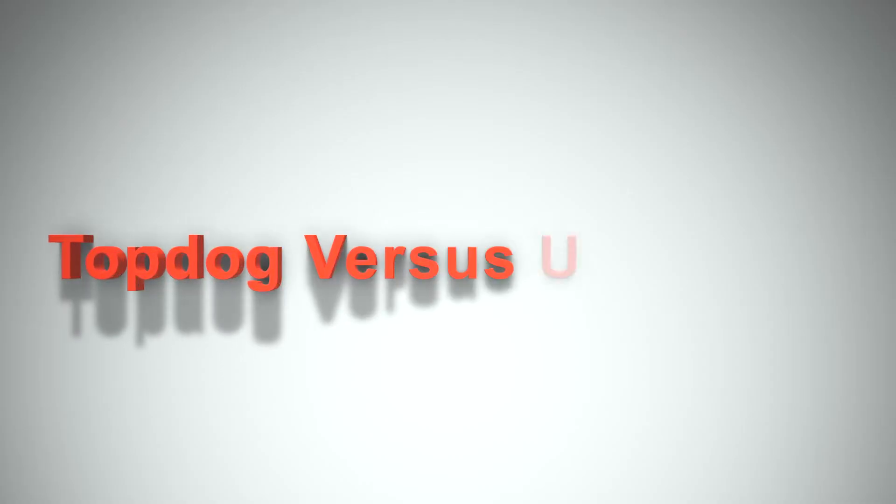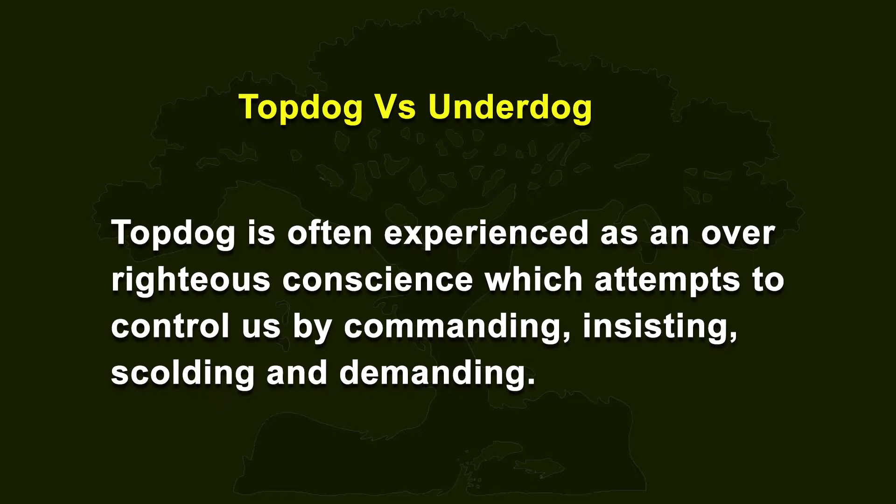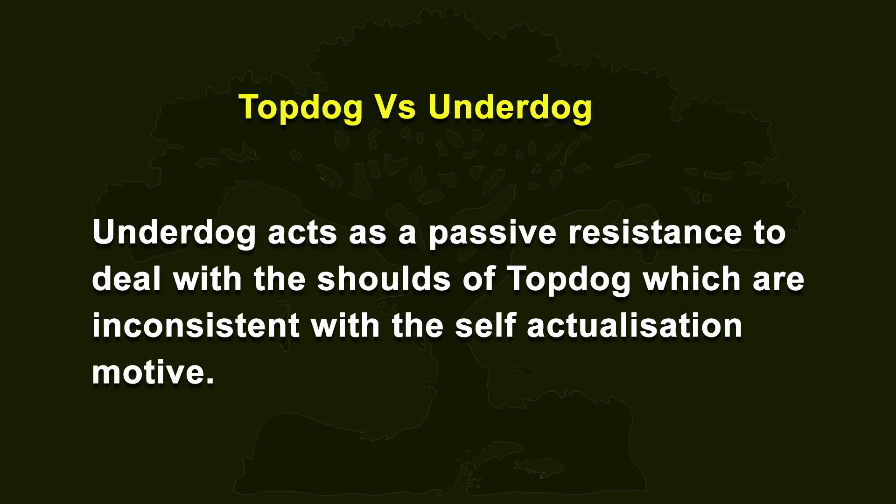The next concept is top dog versus under dog. This results from a faulty socialization process. During socialization, many children are forced to follow ideals and behaviors that do not suit them. Top dog is often experienced as an over-righteous conscience which attempts to control us by commanding, insisting, scolding and demanding. Under dog acts as a passive resistance to deal with the demands of top dog which are inconsistent with the self-actualization motive. The next concept is here and now. The counselor and client form an alliance based on self-responsibility and an agreement to strive to be present with one another. The relationship is viewed as horizontal and the therapist respects the client's capacity to heal and grow, willing to be an authentic person in the therapeutic relationship.